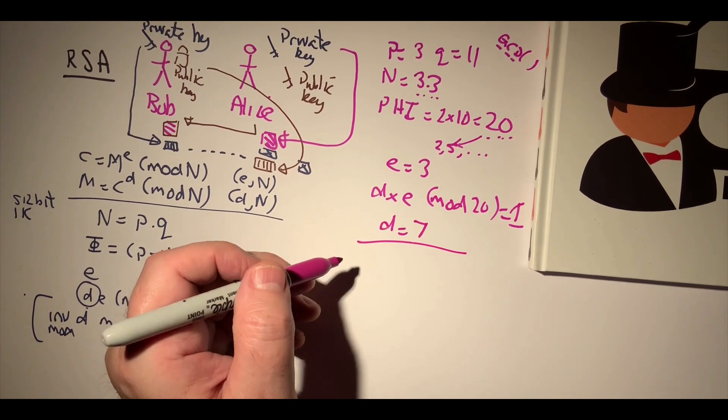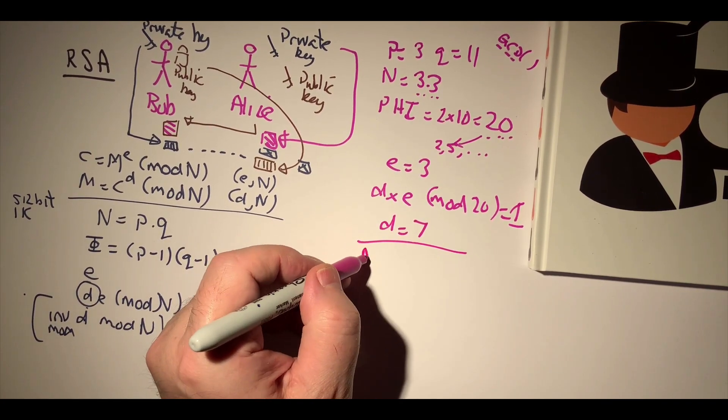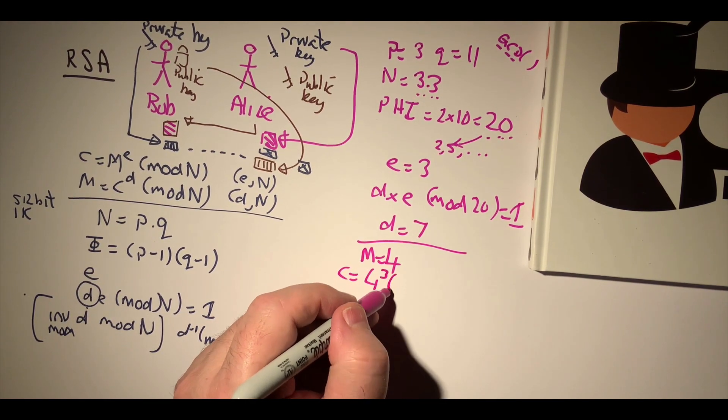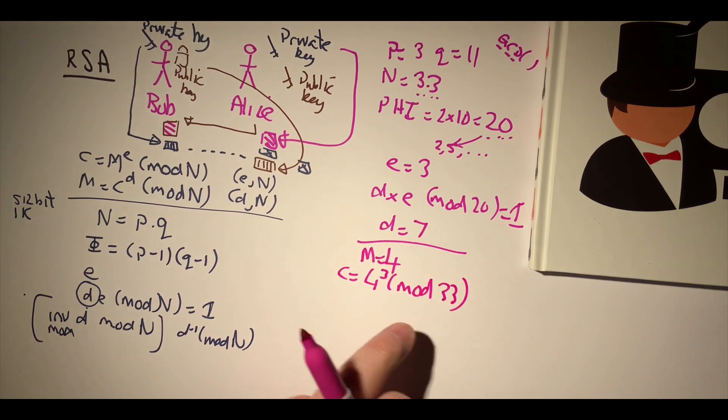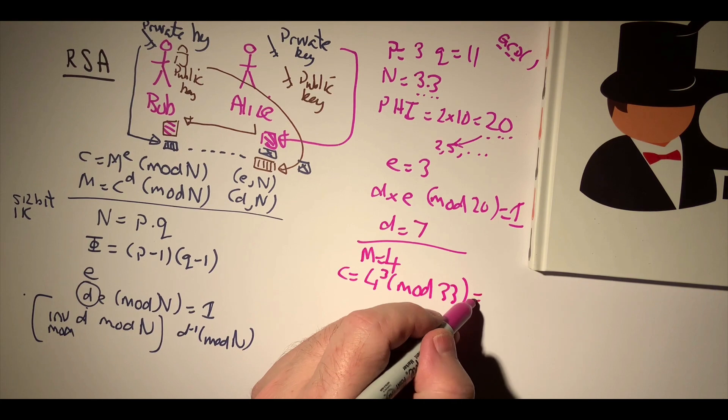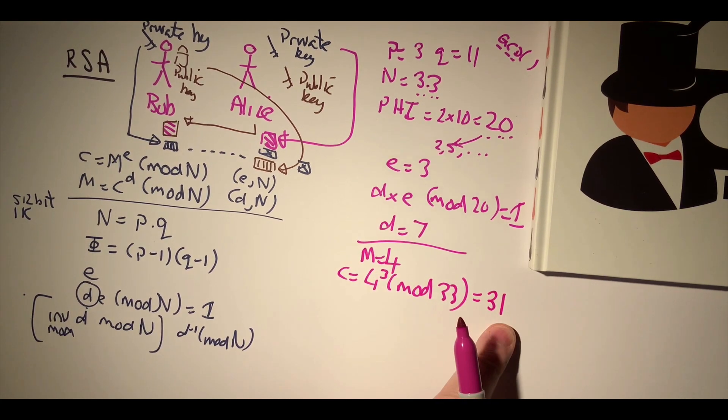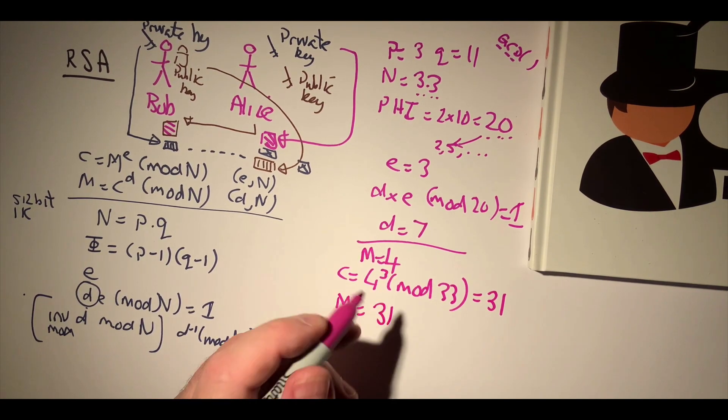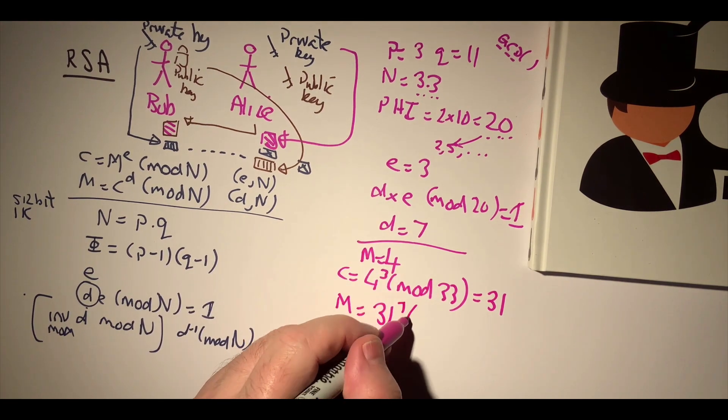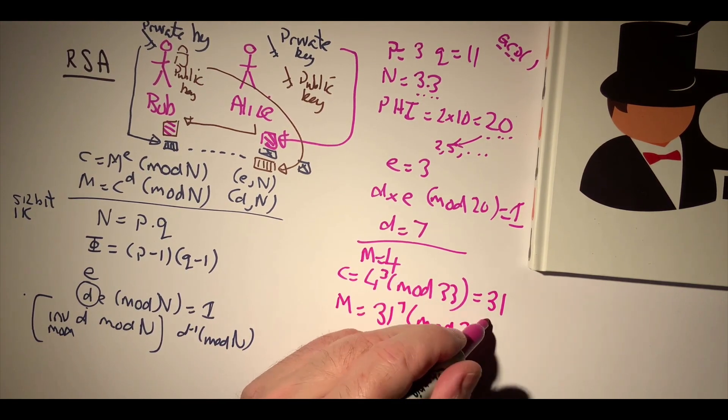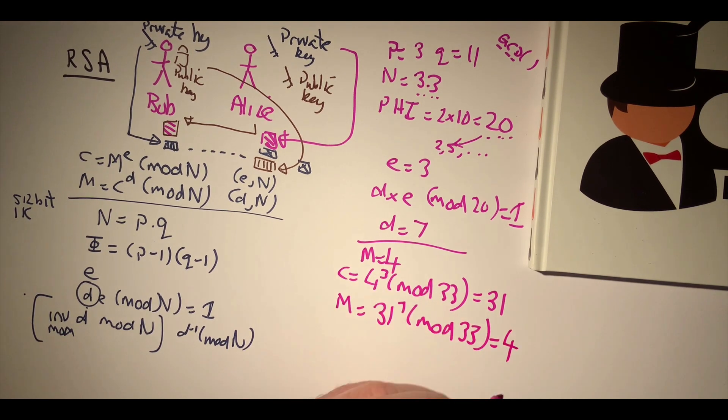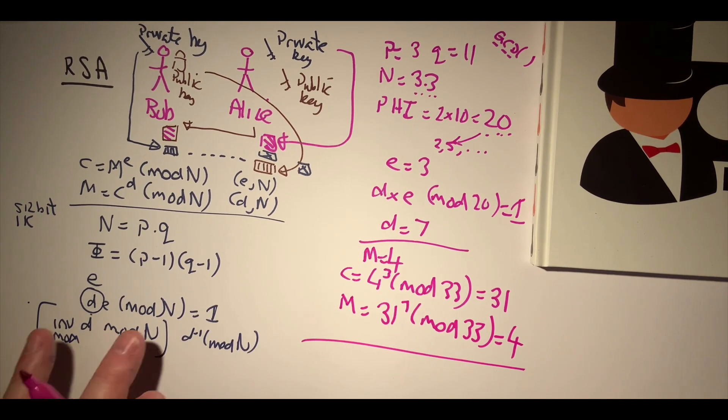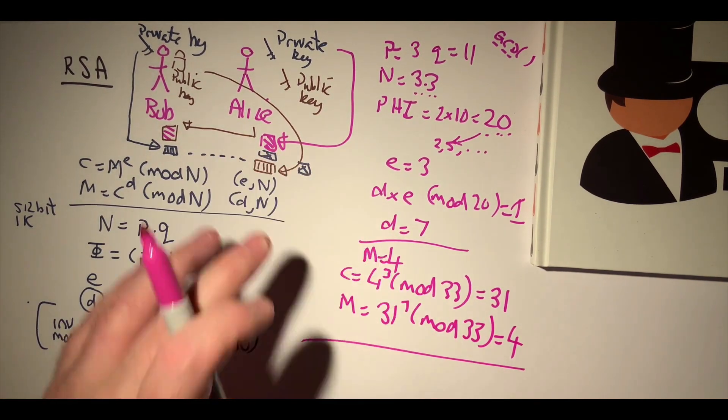So if we now try to cipher this, then if we take a message of 4, then our cipher becomes 4 to the power of 3 mod of 33. And I think when we compute that we get a value of 31. Then when we want to recover the message or decrypt it, we'll take 31, we'll raise it to the power of 7 mod 33, and magically we get the value of 4 back again. Okay, so this gives a quick overview of RSA encryption.